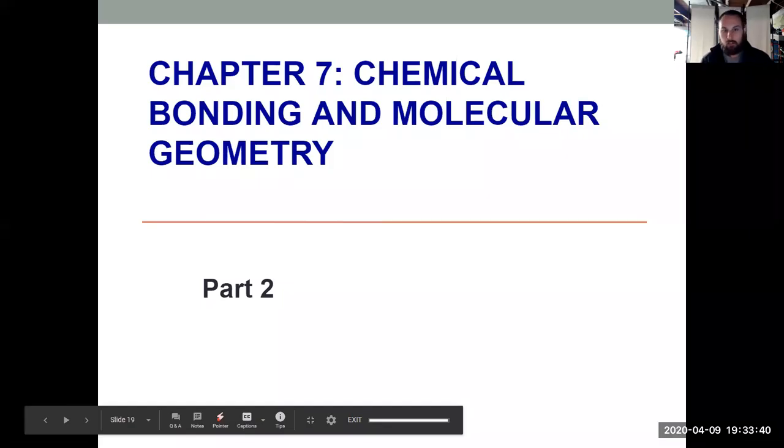For our second video in Chapter 7, we are going to talk about a really important new idea called electronegativity and then transition into Lewis symbols. Both of those are building the foundation for video 3 where we'll introduce Lewis structures, which are a critical idea from Chapter 7 that we'll continue to use throughout your time in chemistry.